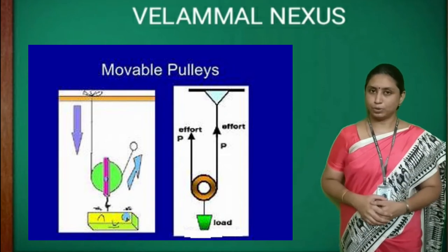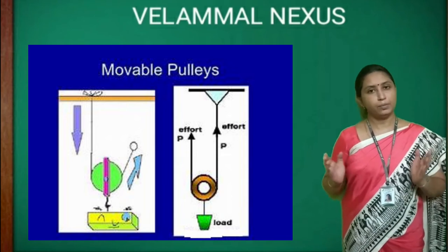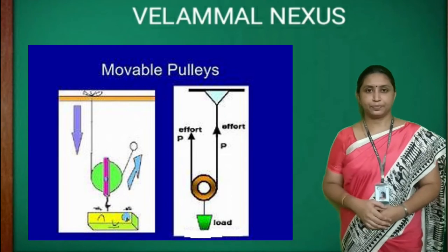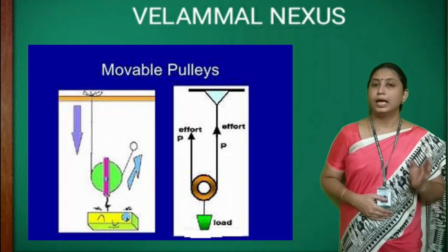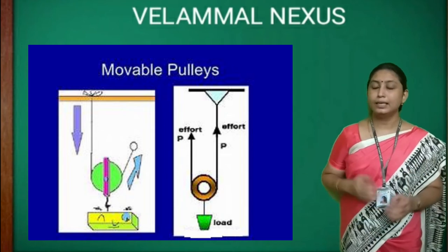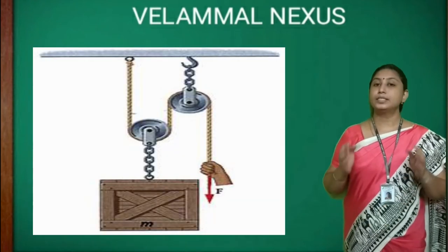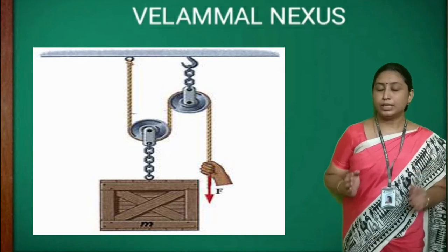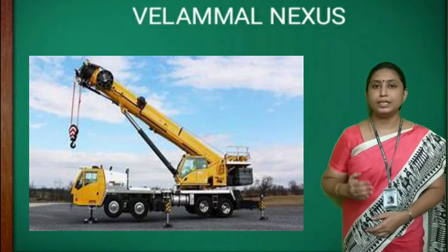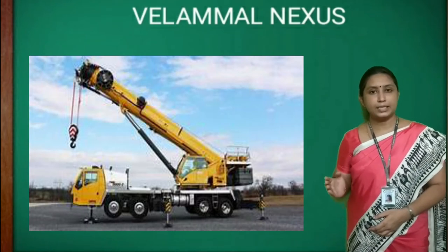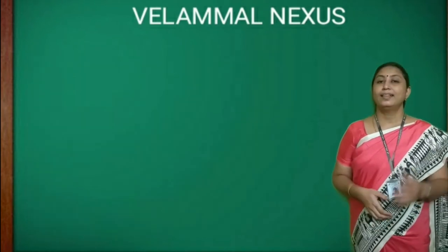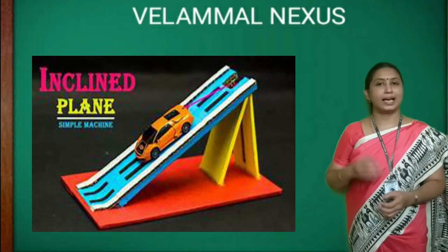In a movable pulley, the axle of the pulley is not fixed to any kind of support — it is free and movable. The load is directly attached to the pulley. This type of pulley helps move heavy objects with lesser effort than a fixed pulley. It is usually used in combination with the fixed pulley. For example, a crane uses both fixed and movable pulleys to lift heavy objects.